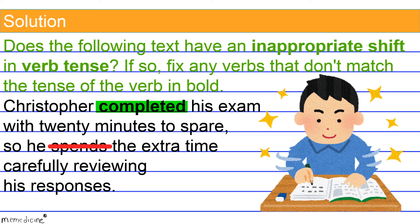Don't be confused — the object of the verb 'spends' is not a general truth. Although the event that follows 'spends' occurred in the past after Christopher completed his exam, reviewing his responses is not happening now. Change 'spends' to its simple, singular, third person, past tense verb form to restore consistency. We change 'spends' to 'spent' — simple, singular, third person, past tense verb form. We have restored consistency, and this verb form is now correct.